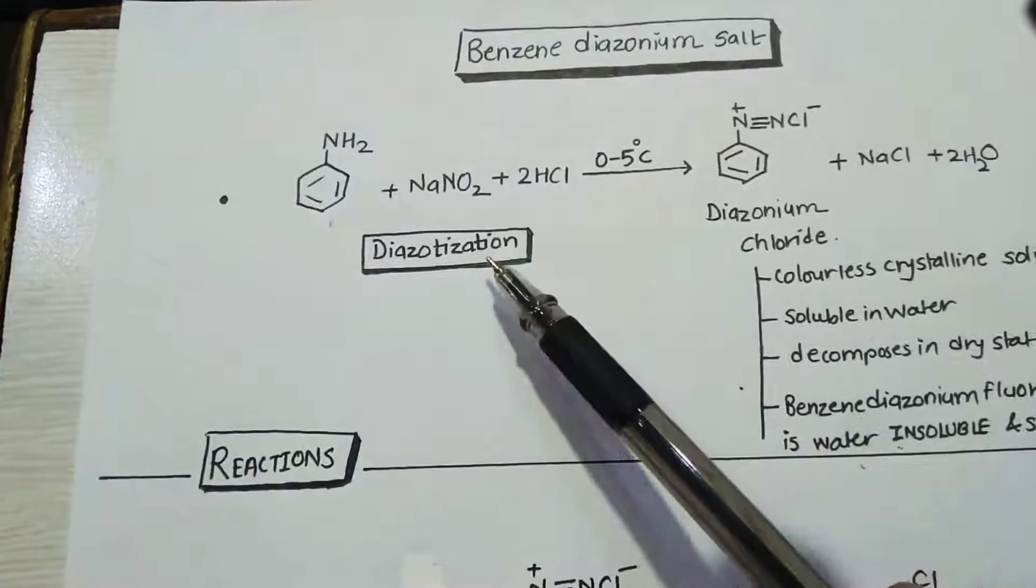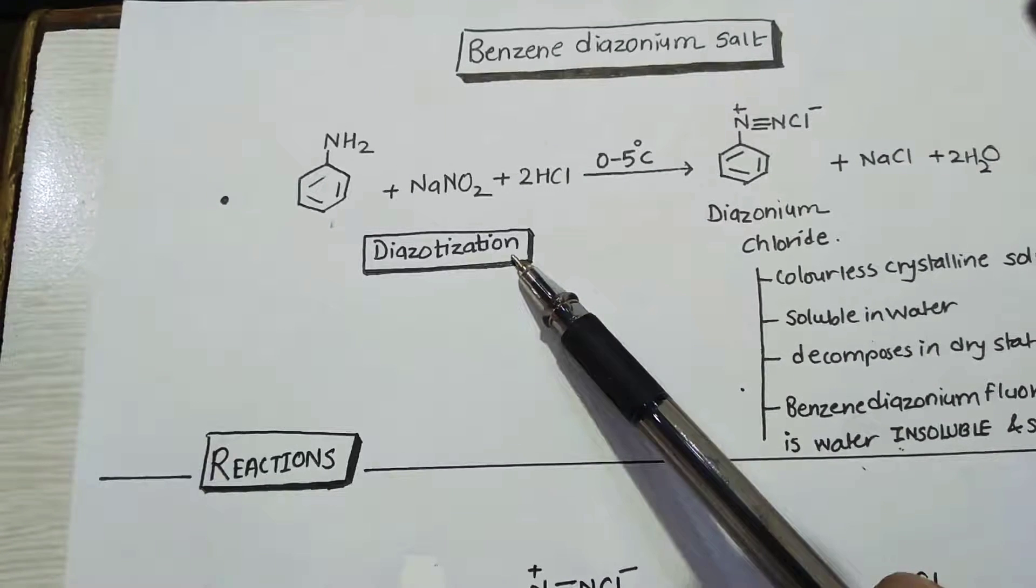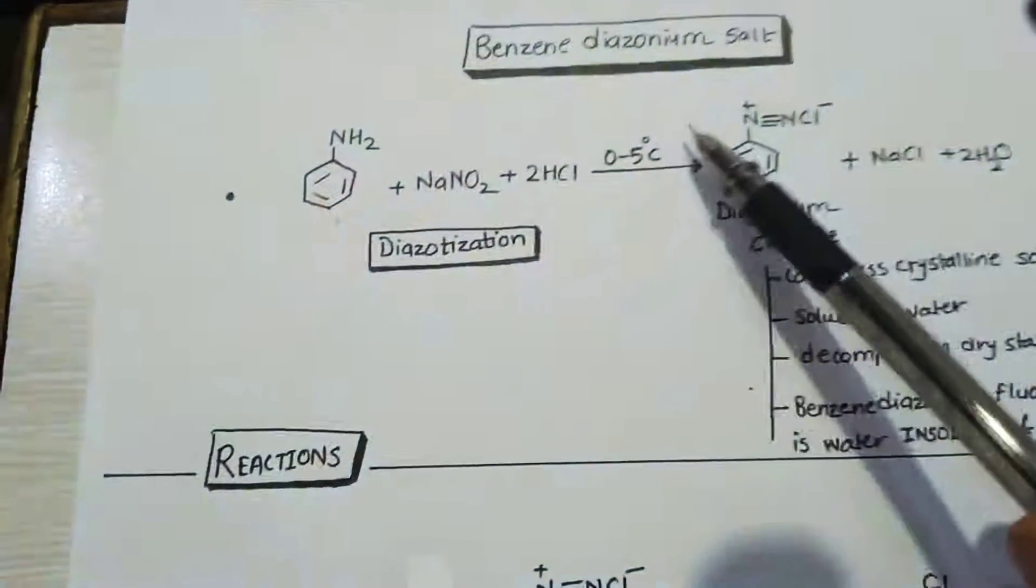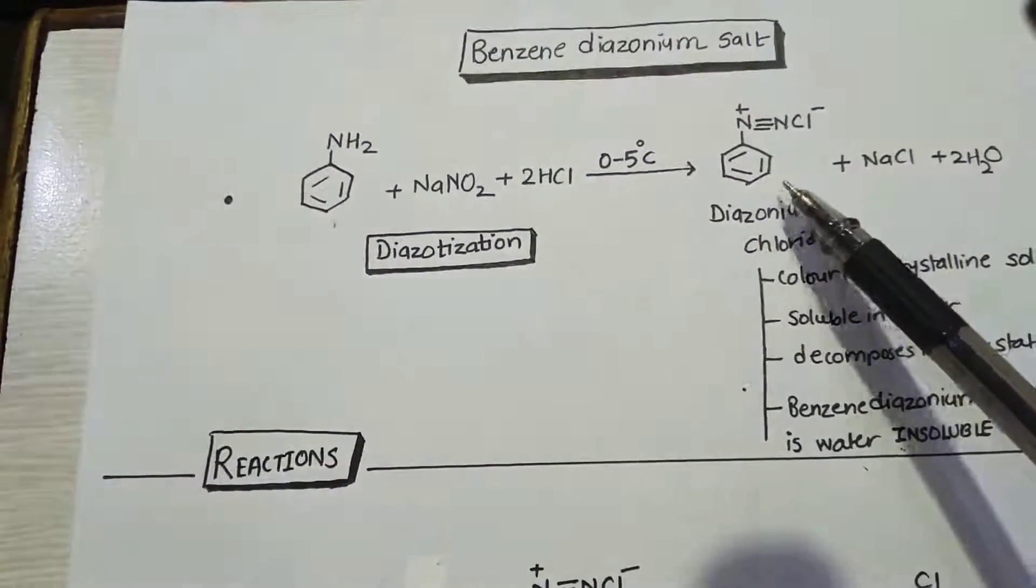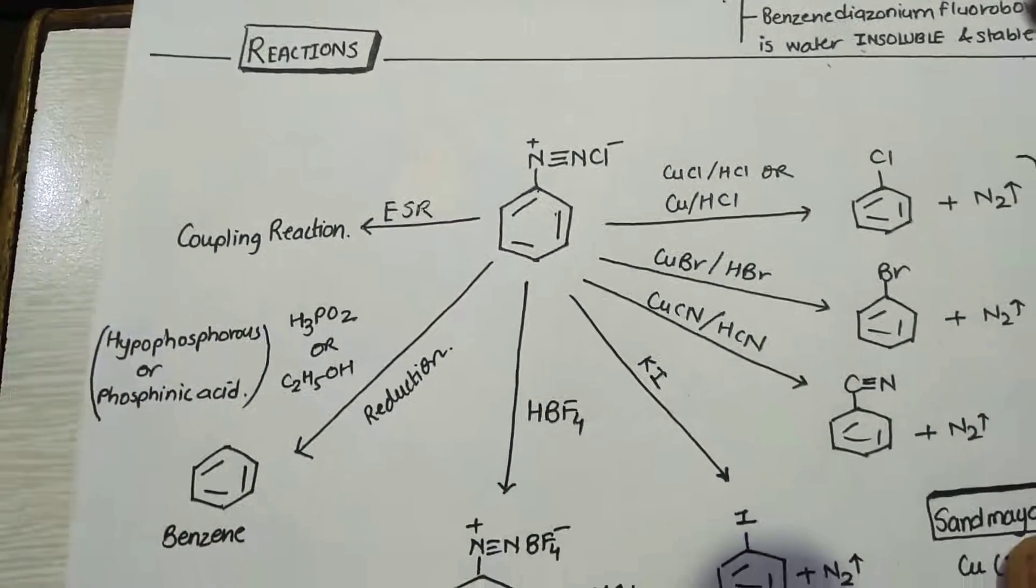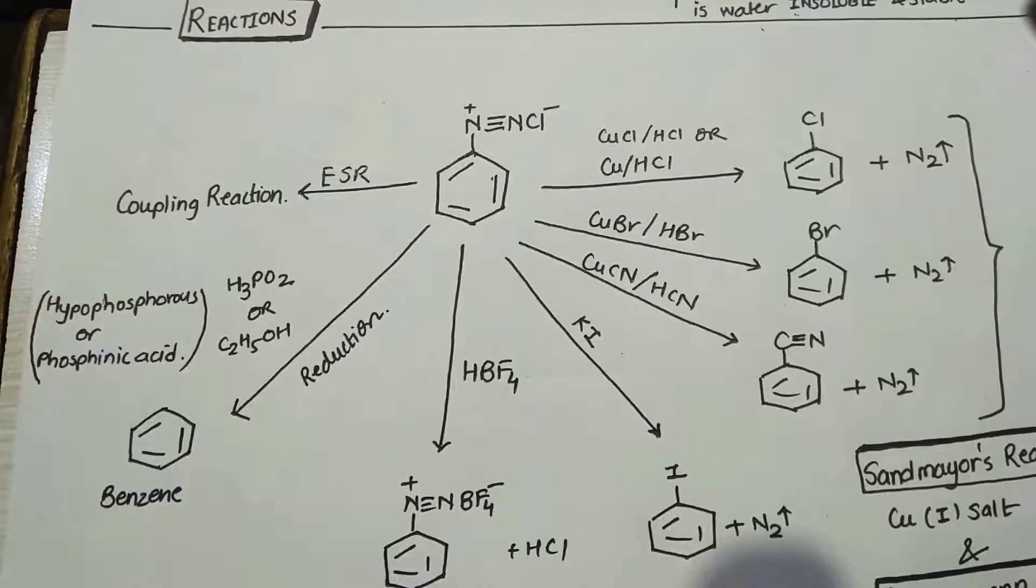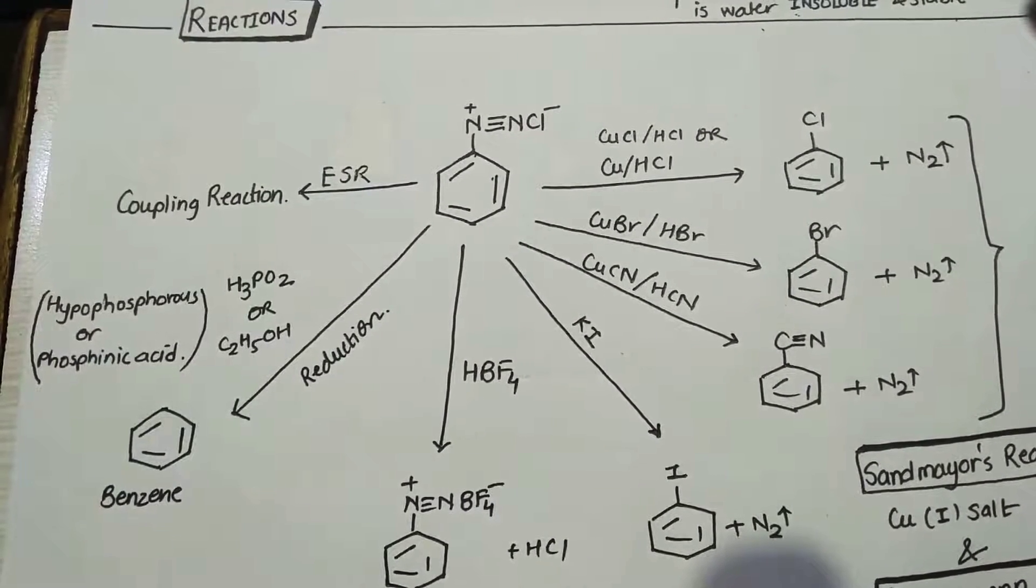So this process is diazotization. Remember the condition of diazotization: NaNO2, HCl, 0 to 5 degrees Celsius. Same diazotization for aliphatic amine will result in formation of alcohol and nitrogen gas is liberated. So this is the only method of preparation of diazonium chloride. Now we come to the reactions. Reactions mainly have two categories: one is NSR and ESR. First we will talk about NSR, that is nucleophilic substitution reactions.